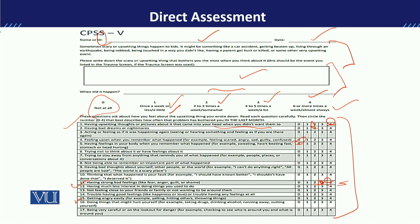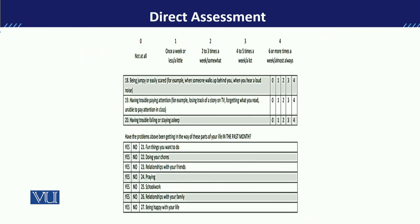There are also items related to behaviors such as self-harm — cutting oneself. This kind of externalizing behavior is also manifested by children. If the child did it once a week, they will mark one; if more frequently, they will rate it higher. After this, there is an item about having trouble falling or staying asleep.